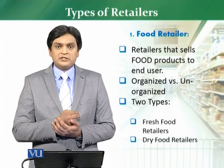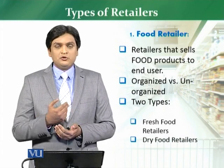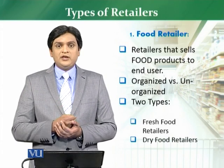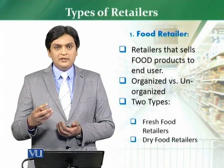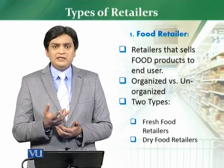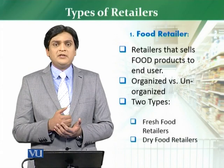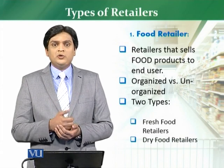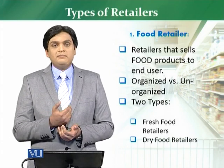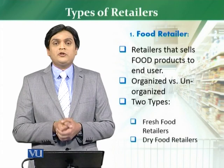So we have two types: fresh food retailers and dry food retailers. Within both types, you will find both organized and unorganized people. If you talk about fresh food in your local area, you will find a fish seller or a meat seller near your house — these are all retailers, but they are unorganized retailers, as you can very easily identify.